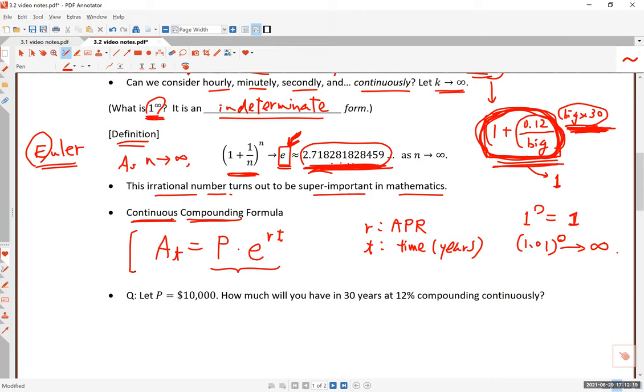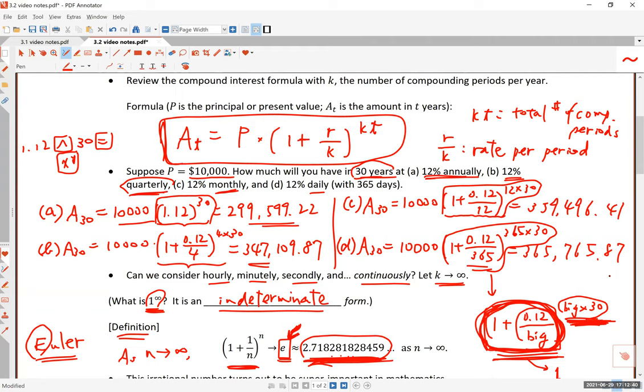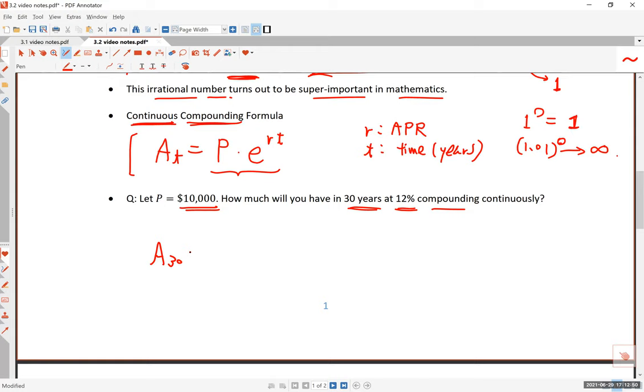Let's do an example. Let P be $10,000. How much will you have in 30 years? That sounds familiar - we've done this four times already with 12% - but in the last four times we calculated this amount for annual, quarterly, monthly, and daily compounding. This time it's continuous compounding. The formula is simpler: it's $10,000 times e raised to 0.12 times 30, because this is r and this is my t. So 0.12 times 30.